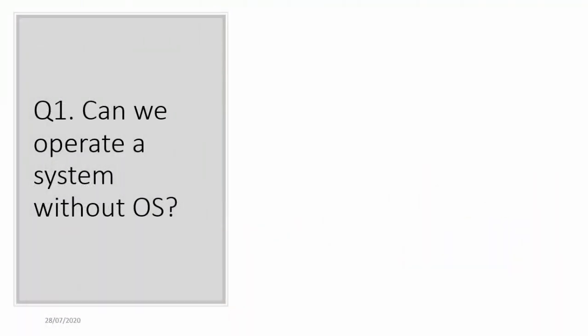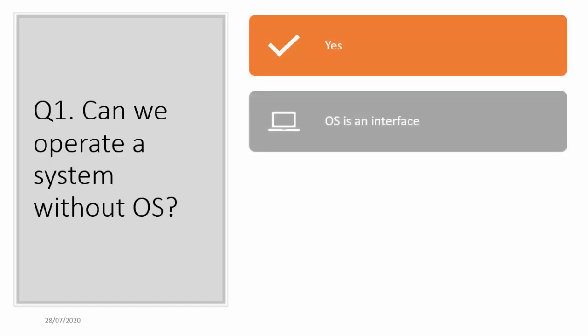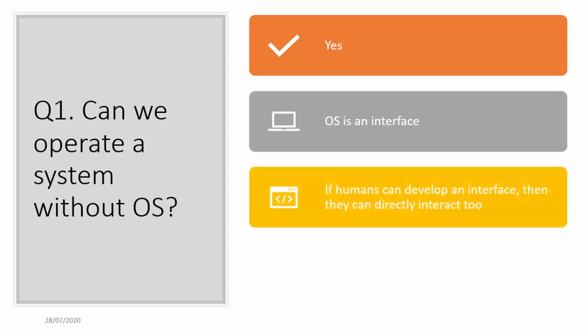Question number one: can we operate a system without having an OS? The answer is yes, we can. Just remember that the OS is an interface between the user and the machine, which means it is also a software or a program developed by a group of programmers. For example, Windows is developed by a group of people working at Microsoft. So if humans can develop an interface, this means they can directly interact with the hardware too.